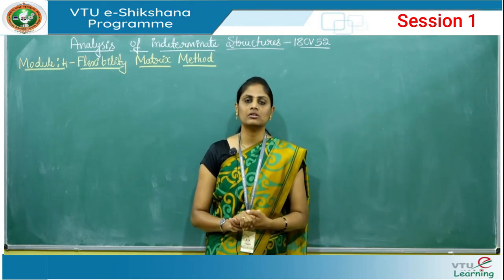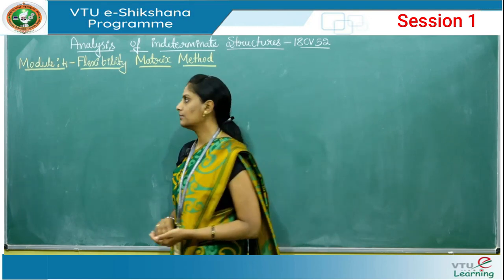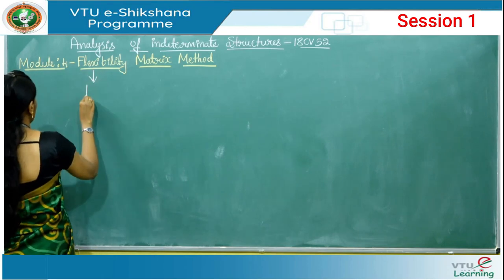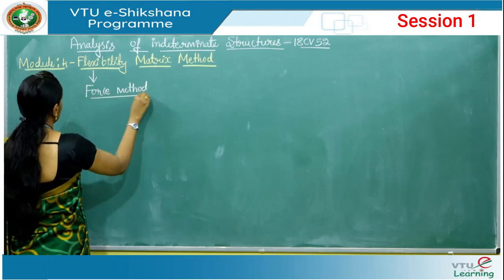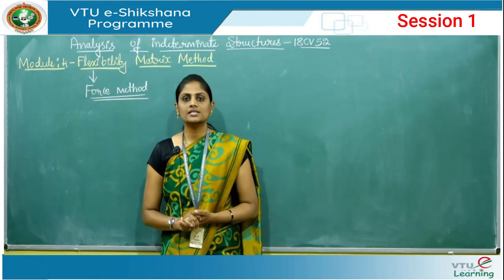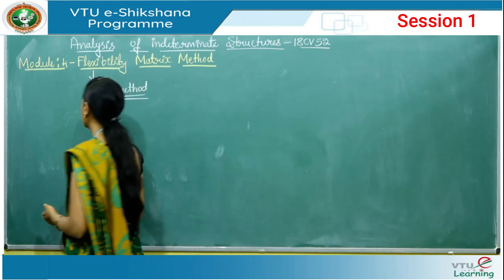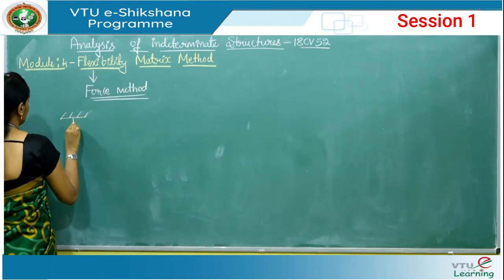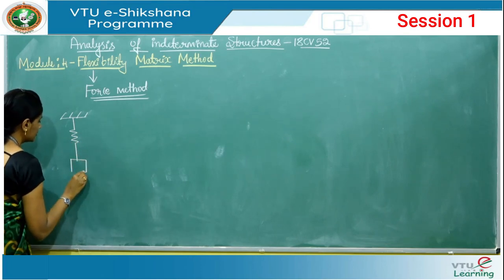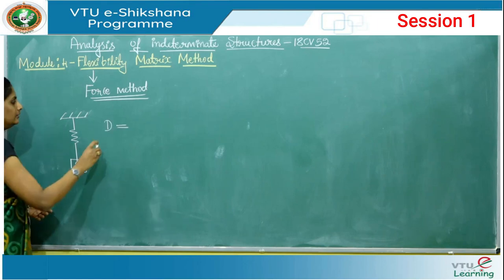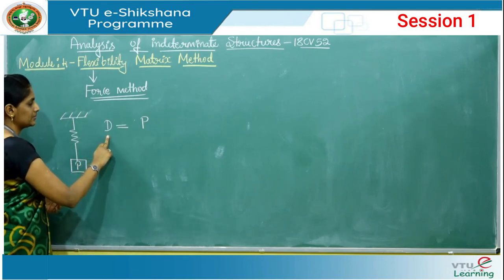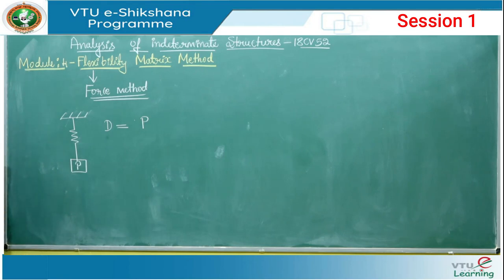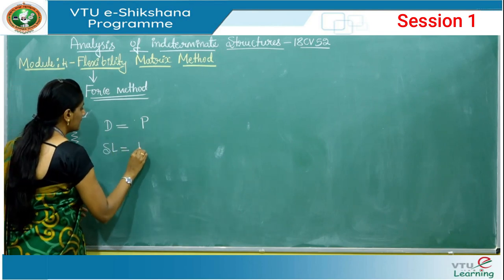In this module we are going to discuss in detail about the flexibility matrix approach. This method is also called the force method because we use unit force to find unknown displacements. To understand the flexibility matrix, let us consider a system with a single degree of freedom — a spring with mass P. The displacement D can be expressed in terms of applied force P using the basic relation: delta L equals PL divided by AE.